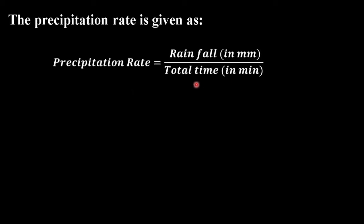Now we will move to the calculation part. As mentioned in the manual, the precipitation rate is calculated as: precipitation rate equals rainfall in millimeters divided by total time in minutes. With the help of the number of data points, you can calculate the rainfall in millimeters, and when you divide it by the total time, you get the precipitation rate. While performing this experiment, make sure the water level is maintained at a fixed level in the bucket.